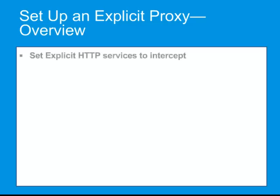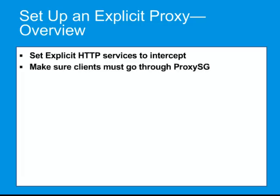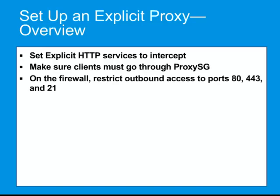First, configure the explicit HTTP services to intercept. Next, make sure that clients can access the internet only by going through the ProxySG. Configure the firewall to restrict outbound access to ports 80, 443, and 21 to the appliance's IP address. Refer to your firewall documentation if you require more information.